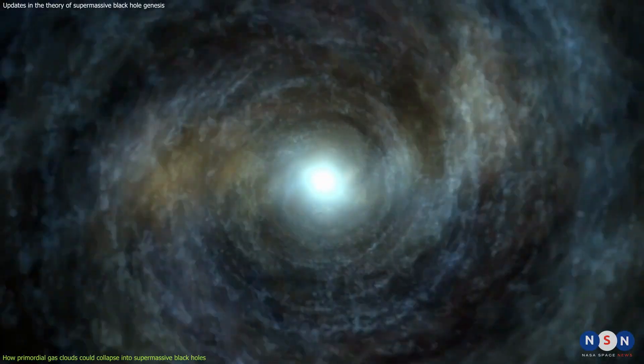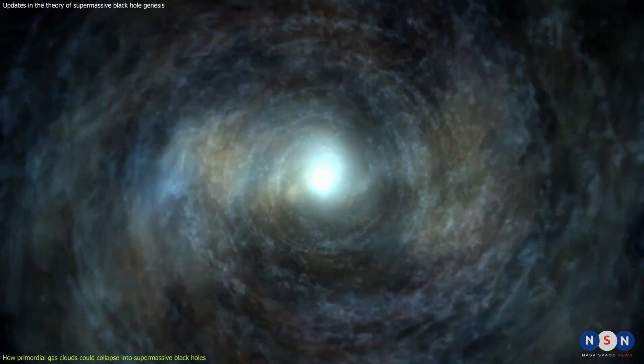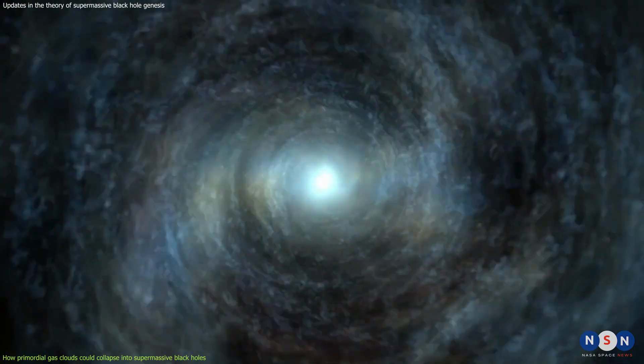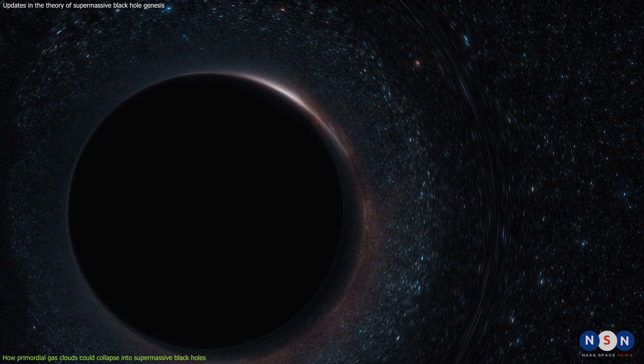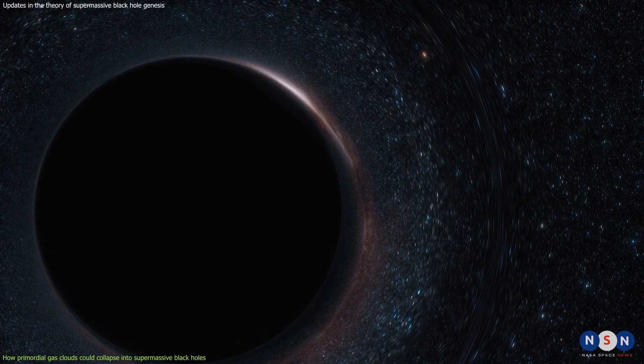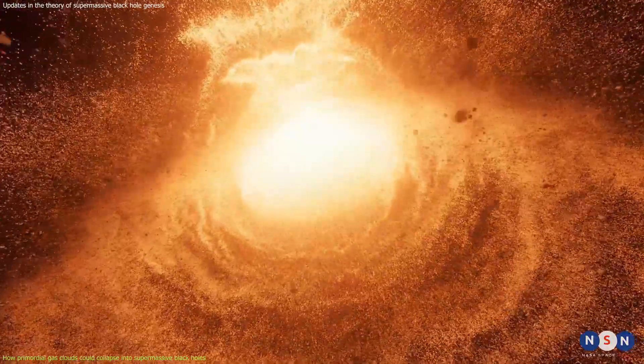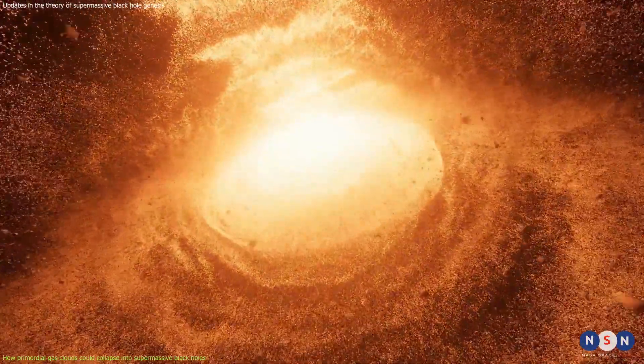The study found that some of the black holes could have very high spins, meaning that they could rotate very fast and accrete matter very efficiently, while others could have very low spins, meaning that they could rotate very slowly and accrete matter very poorly. This could explain why some supermassive black holes are more luminous than others and why some of them have jets of plasma shooting out from their poles while others don't.